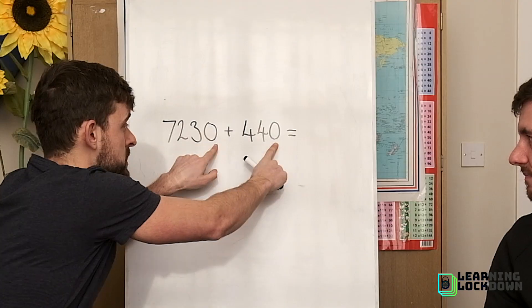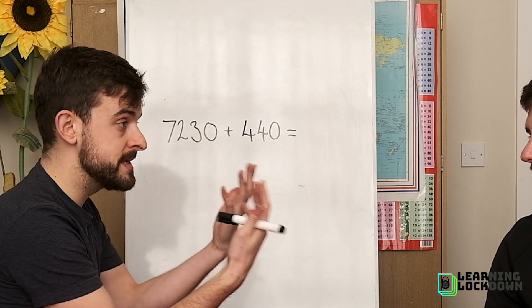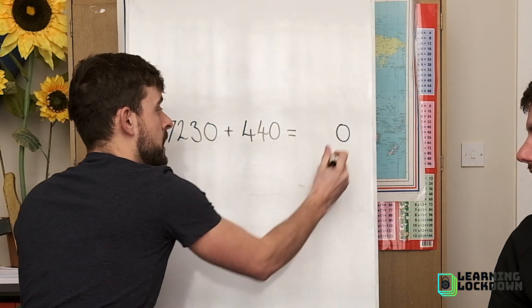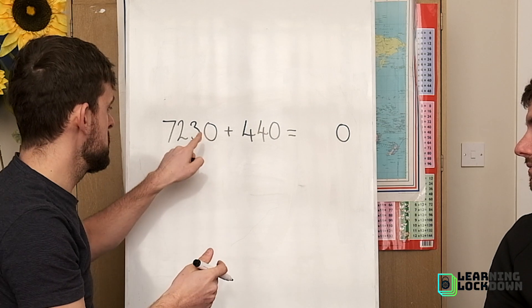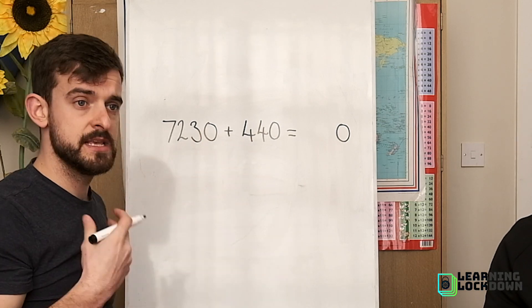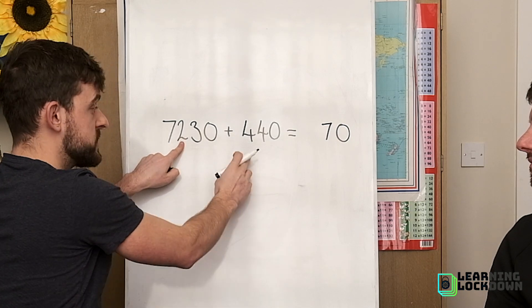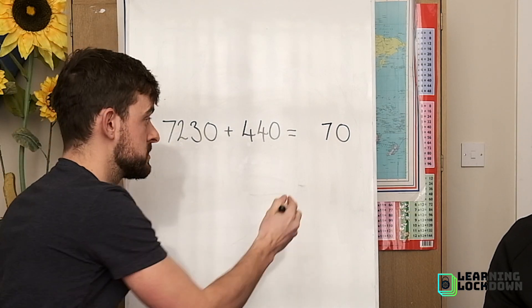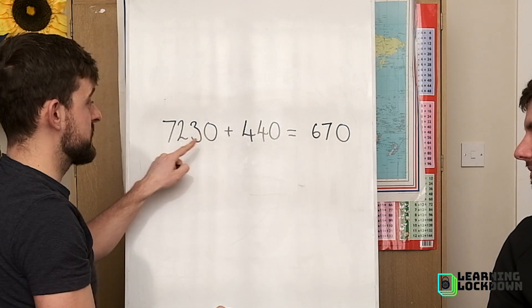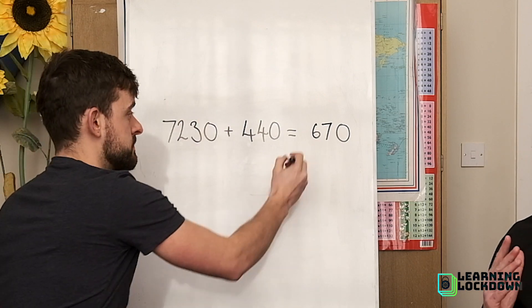We can see our ones, there's nothing there. So zero add zero is zero. Our tens, we've done this: three lots of ten add four lots of ten is seven lots of ten. Hundreds: two lots of hundreds add four lots of a hundred, six lots of hundreds. And seven lots of a thousand add no thousands, seven thousands.